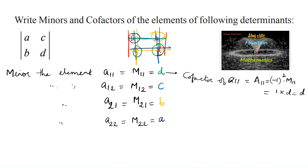Similarly, we can write the cofactor for the second element. A12 is equal to (-1)^(1+2) = (-1)^3, into minor M12. That is (-1) into M12, and M12 is C, so A12 equals minus C.